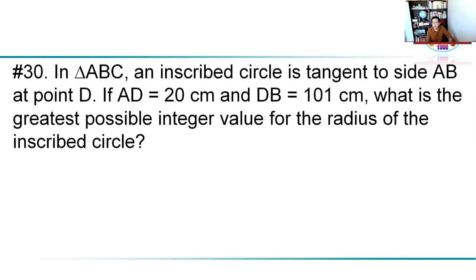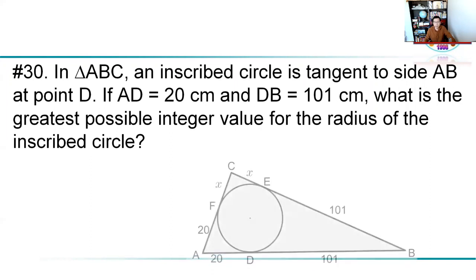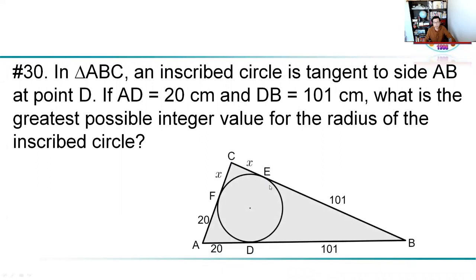Let's take a look at the diagram first. This is triangle ABC with the inscribed circle. AB is split by the tangent point D into two segments: 20 and 101. We try to find the greatest possible integer value for the radius of the circle. We are only provided the base side AB split into two segments, but AC and BC can be varied. So we try to find the greatest possible inradius value.